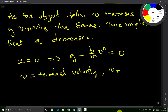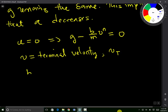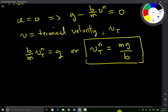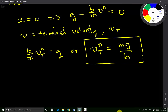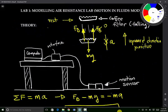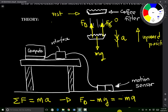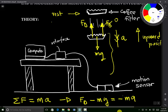When A becomes zero, this means that g minus B over m times V raised to the power N equals zero. The speed at this particular time is known as the terminal velocity, which I will represent as V_T. So if we solve for terminal velocity, we have B over m times V_T to the power N equals g. Therefore, V_T raised to the power N equals mg divided by B. The motion sensor measures the terminal velocity of the falling coffee filter.